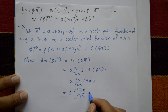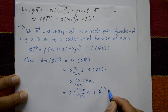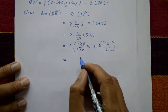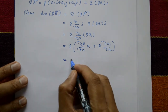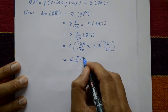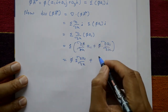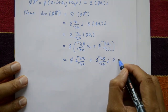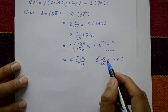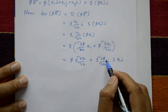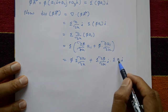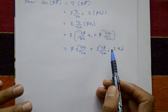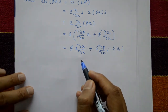This equals summation of (∂φ/∂x · A₁ + φ · ∂A₁/∂x). Separating the two terms: the first term is φ times summation of ∂A₁/∂x, and the second term is summation of ∂φ/∂x · i, times summation of A₁·i. Here ∂φ/∂x·i means the i, j, k components, and summation of A₁ means A₁i + A₂j + A₃k.